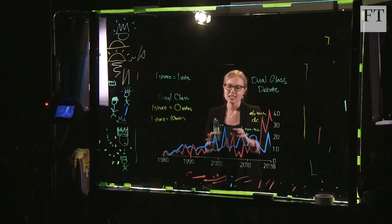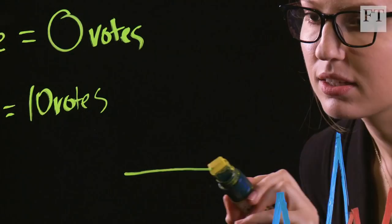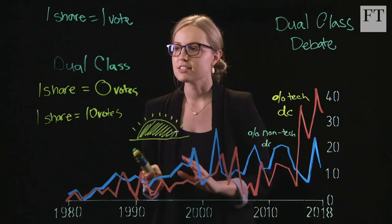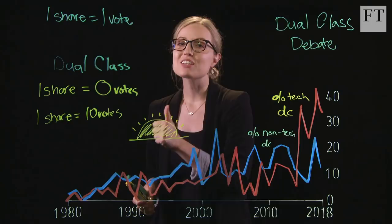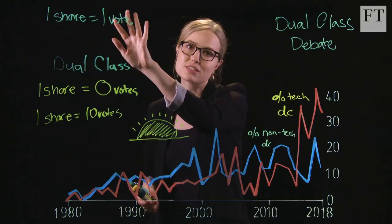But look, there is a potential compromise here, and it's called the sunset clause. A sunset clause says, yes, go ahead, have your dual class share system when you go public, but let's put an expiration date on it. So either when the CEO steps down, or after an arbitrary number of years, let's have this dual class system go back to the normal system, so that investors aren't shut out forever.